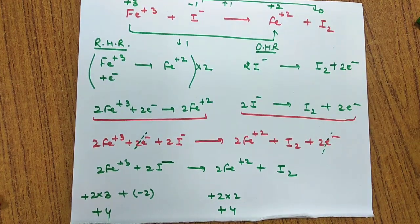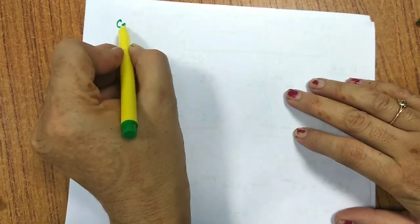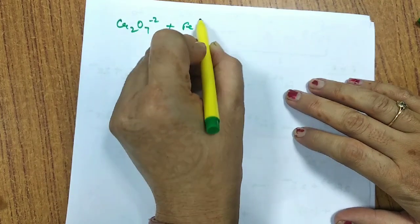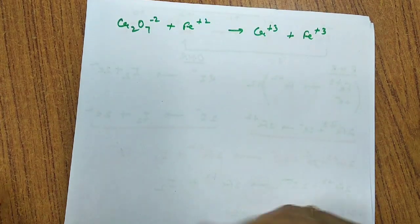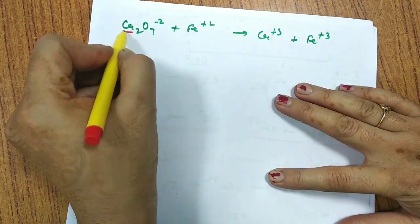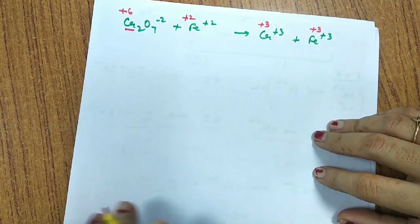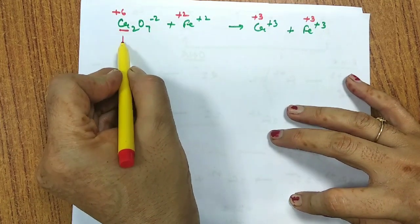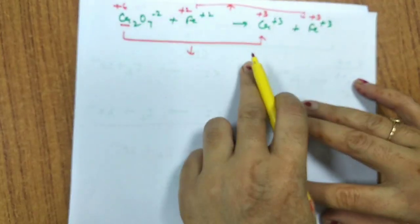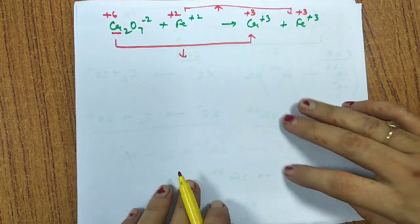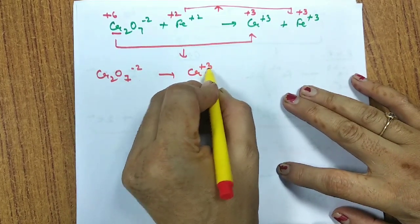Let's now balance a second equation: Cr₂O₇²⁻ + Fe²⁺ → Cr³⁺ + Fe³⁺. First, write the oxidation numbers: for chromium in Cr₂O₇²⁻, the calculation gives +6; iron is +2 on the left and +3 on the right. Since chromium goes from +6 to +3, it undergoes reduction; iron goes from +2 to +3, so it undergoes oxidation.